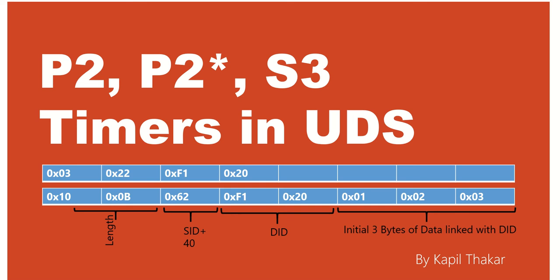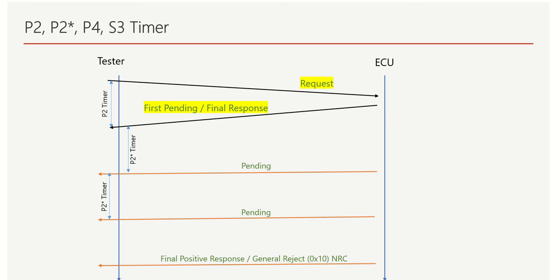Welcome to this new training session. Today we will see what exactly is meant by the P2, P2 star, and S3 timers, and how exactly they are treated in UDS. In general, we have a tester and an ECU — a request is sent from the tester side and the ECU sends a response.